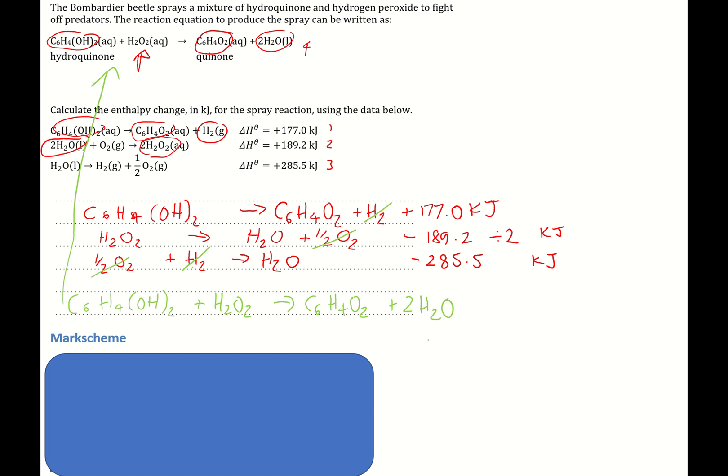we would then do plus 177.0 plus, and open brackets here, minus 189.2 divided by 2, plus, and open brackets again, minus 285. Now this will equal—let's, I'm gonna do this on my calculator right now. So plus, so 177 plus, I'm opening brackets, minus 189.2 divided by 2, and I'm closing my brackets, then plus, open brackets, minus 285.5, and close the bracket. And this gives me a grand answer of minus 203.1. Let's not forget the units.